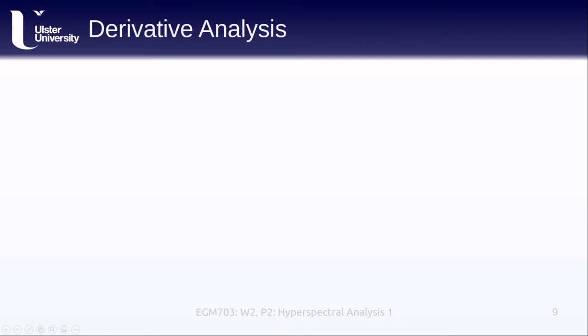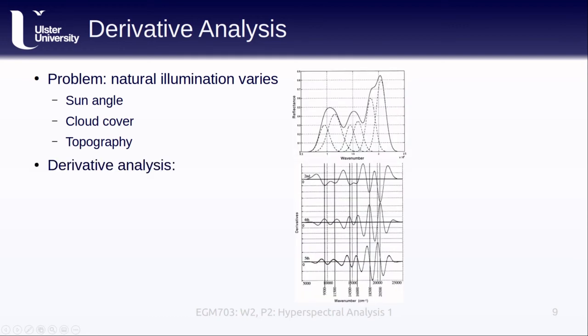In a similar vein, we have a technique known as derivative analysis, which is quite prevalent in lab-based spectroscopy. As mentioned on the previous slide, natural illumination can vary significantly due to factors such as a different sun angle, cloud cover, or even topography. This changes the reflectance curves that we measure and can make identification more challenging. Derivative analysis basically says what it does on the tin, or does what it says on the tin. By taking derivatives of the reflectance curve, we can more easily identify the location of the different component features.